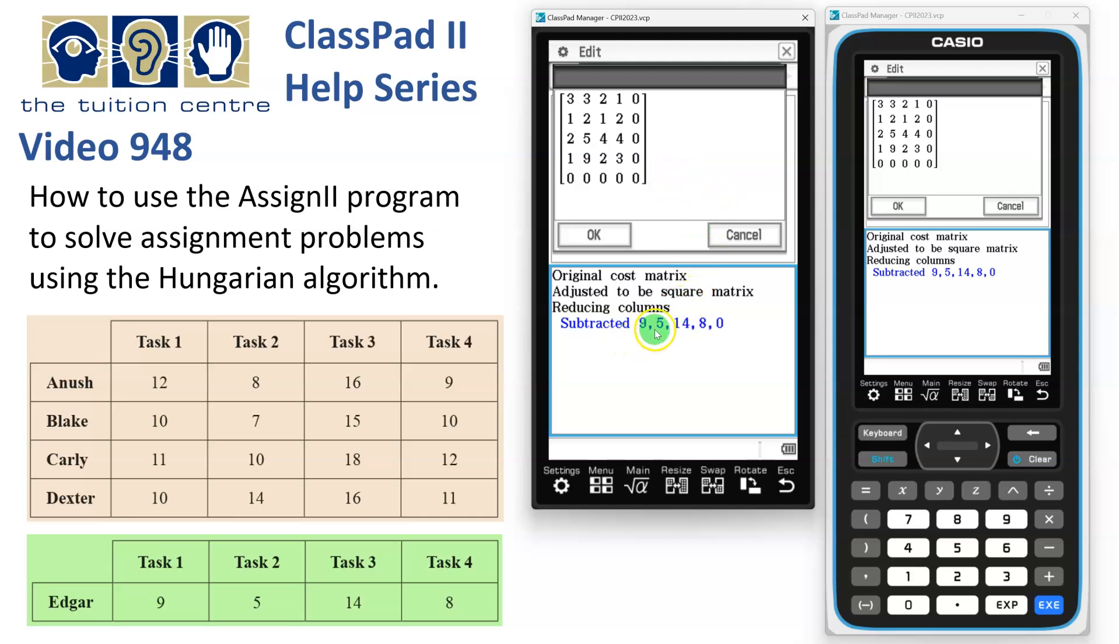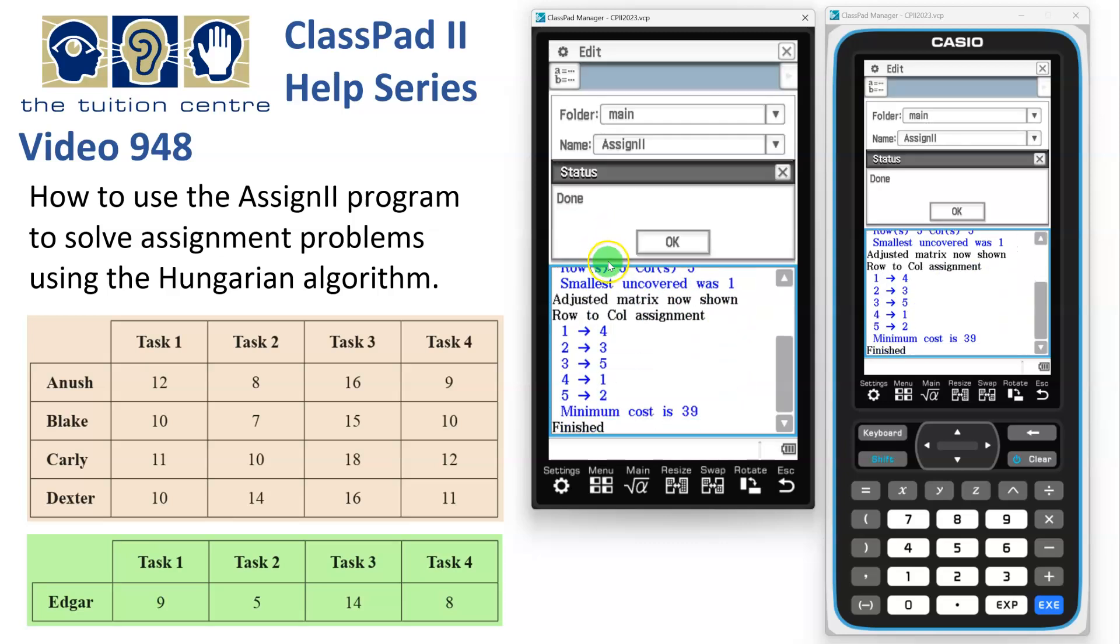And so we've subtracted 9, 5, 14 and 8. And then we've started covering rows and columns. We covered row and column five. The smallest uncovered was 1, and so the minimum cost is now 39.